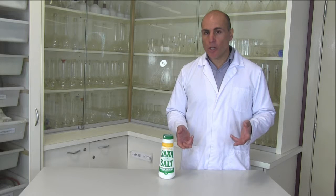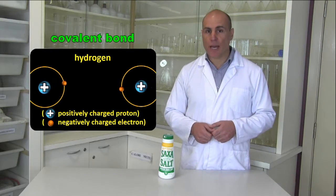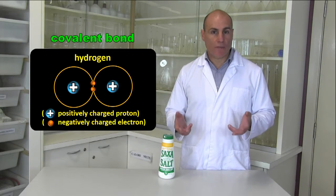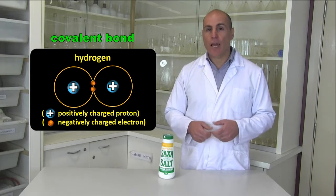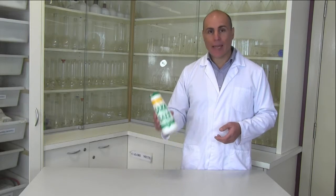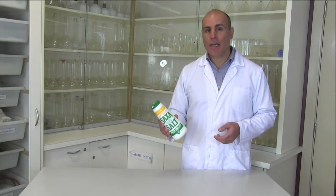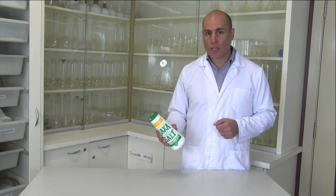So what was going on? We saw how in a covalent bond, say between two hydrogen atoms, the nuclei of two different atoms attract each other's electrons into their own electron shells, and so a bond forms. But this kind of bonding doesn't occur between the Na and Cl atoms in table salt. In the 1920s, it was discovered what does occur.